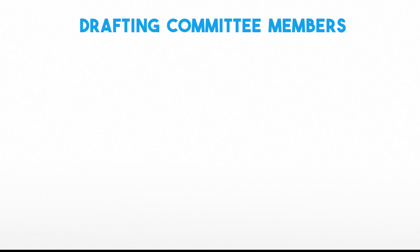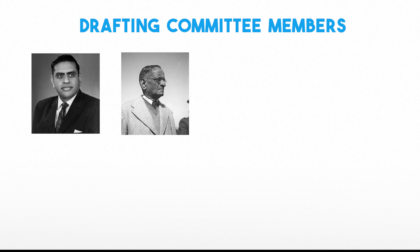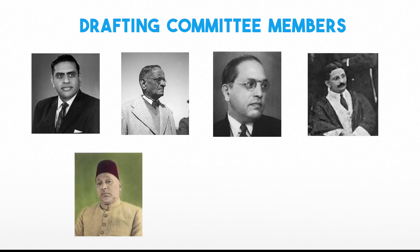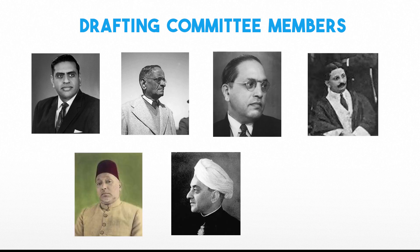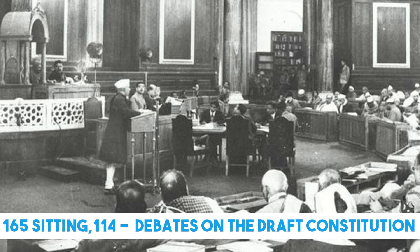The drafting committee had seven members: Alladi Krishnaswami Iyer, N. Gopalswami, B.R. Ambedkar, K.M. Munshi, Muhammad Sadullah, B.R. Mittar, and D.P. Khetan. At its first meeting on 30th August 1947, the drafting committee elected B.R. Ambedkar as its chairman. Out of 165 sittings of the Constituent Assembly, 114 were spent debating the draft constitution.